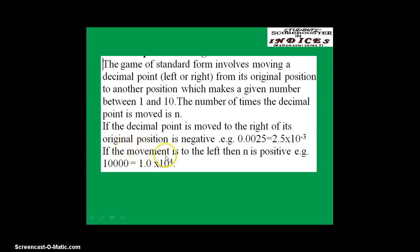If the movement is to the left, it is going to be positive. For instance, I have the number 10,000. Please note when you have a number like this, the decimal point is at the end. So if I move the point 1, 2, 3, 4 places to the left, I am going to have 1.0. And since I have moved to the left 4 times, my n is going to be 4.